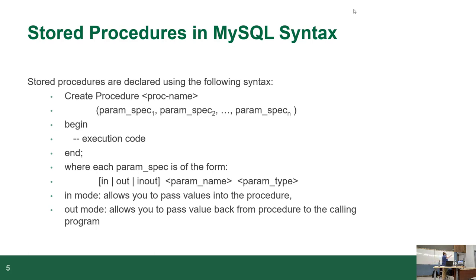The parameter specifications are as follows: there's the option to make it IN, OUT, or INOUT. So you can actually have a parameter that comes in with a value, gets modified as part of the process, and feeds it back out. IN mode allows you to pass a value into the stored procedure; OUT mode allows you to pass a value back out. It's bi-directional.